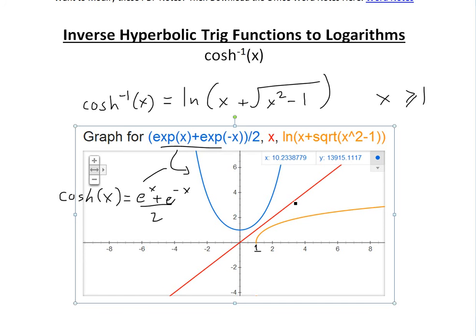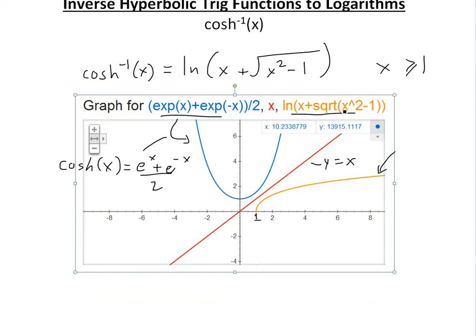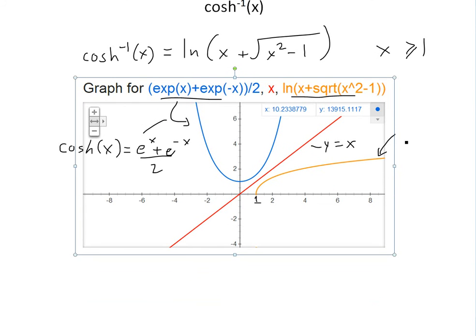I've also graphed y equals x, shown in red, and also the inverse function. My calculus book uses this same inverse. I drew the logarithmic form here because I wasn't sure how to enter inverse hyperbolic cosine of x into Google's Graphing Calculator. This curve is our inverse hyperbolic cosine of x function.